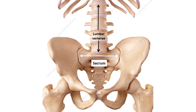The sacrum is a triangular structure made of fused sacral vertebrae, and below it is the coccyx, which is the last part of the vertebral column. The sacroiliac joint is the joint that attaches the pelvic girdle to the vertebral column — the axial skeleton. It is similar to the joint that connects the pectoral girdle to the axial skeleton, which was the articulation of the medial end of the clavicle with the manubrium sternum.